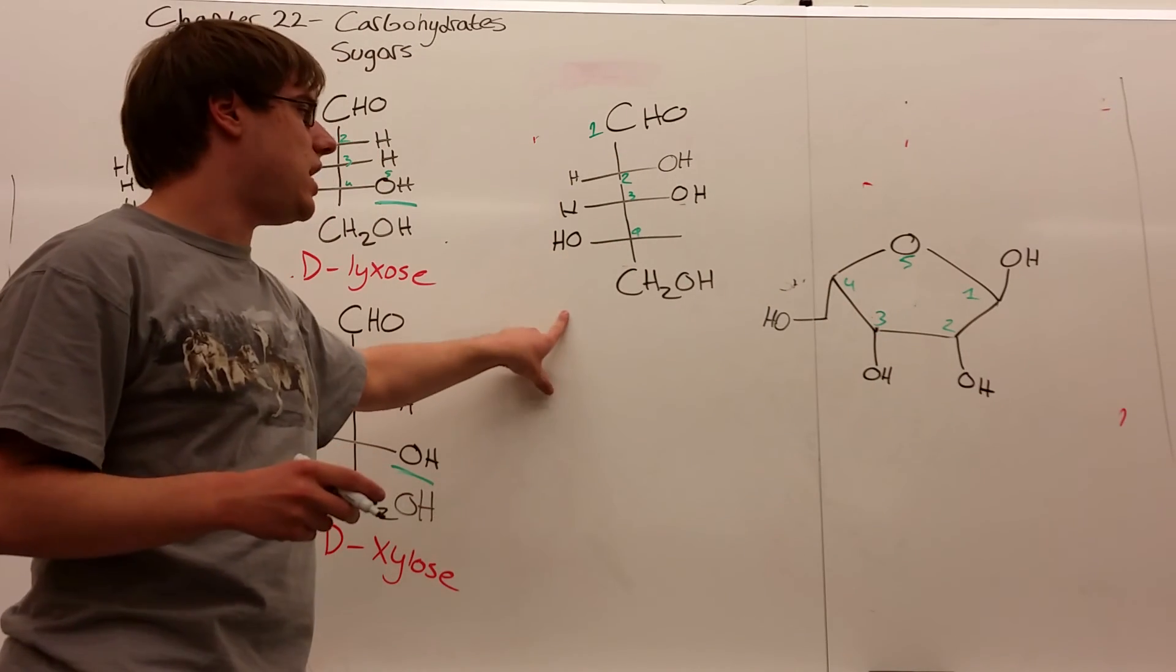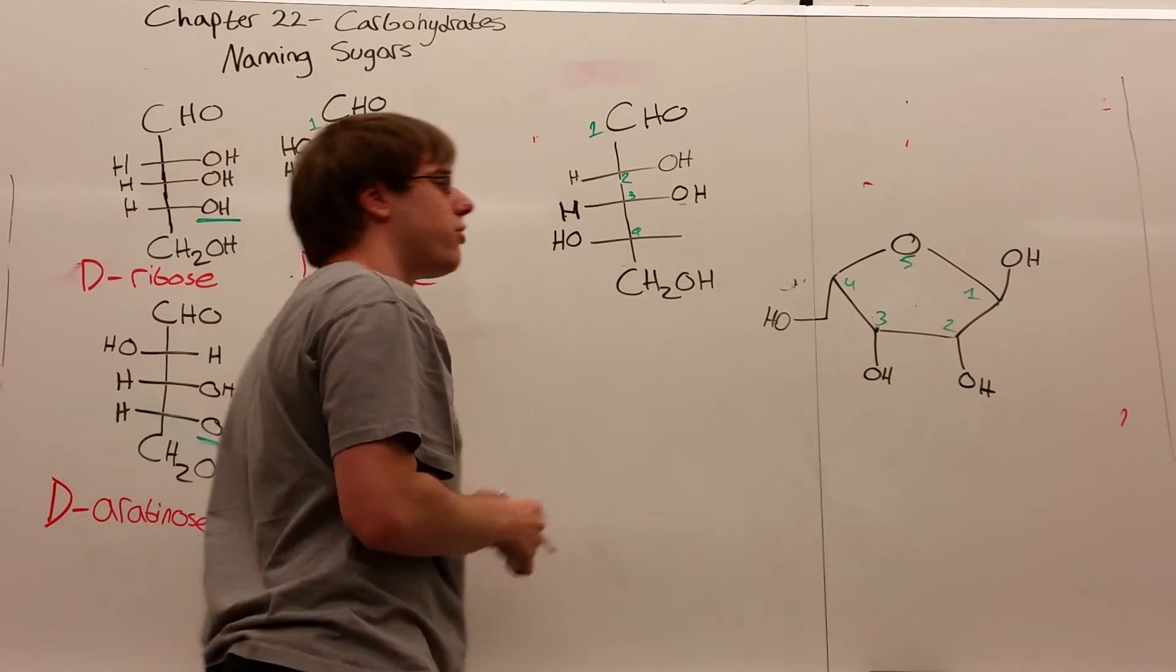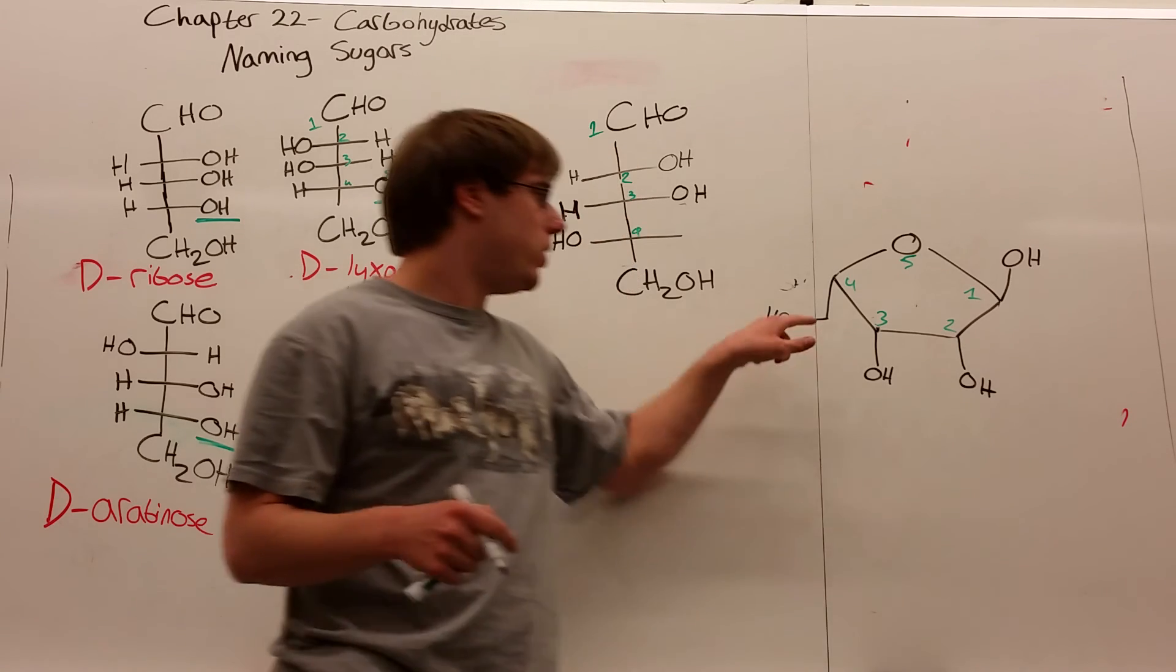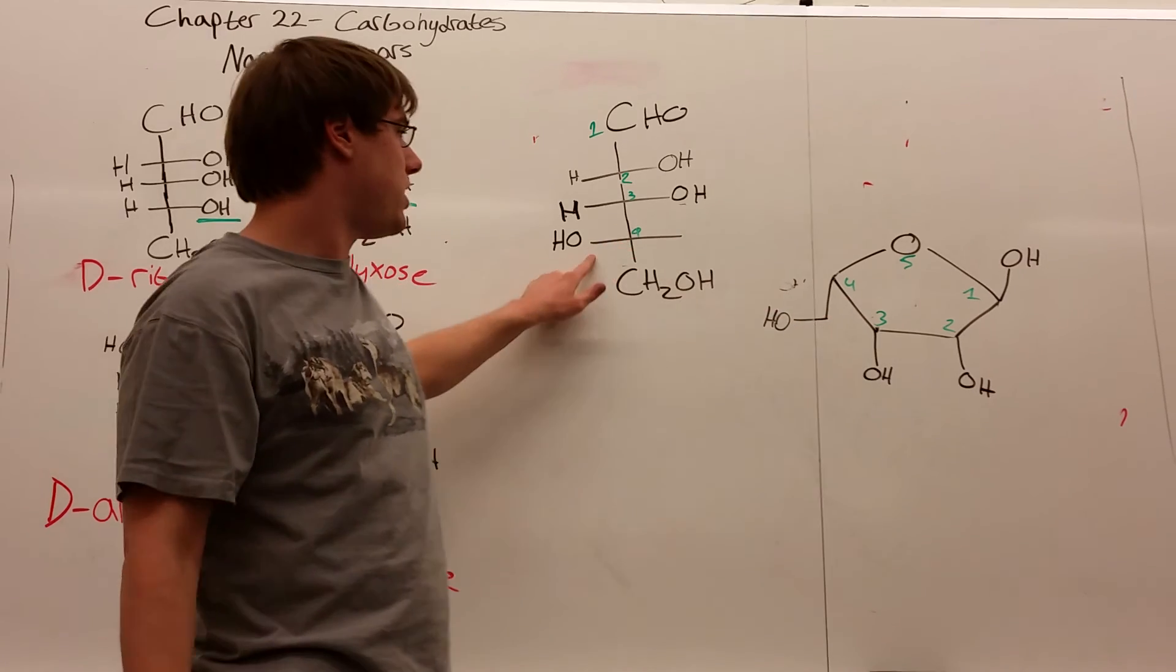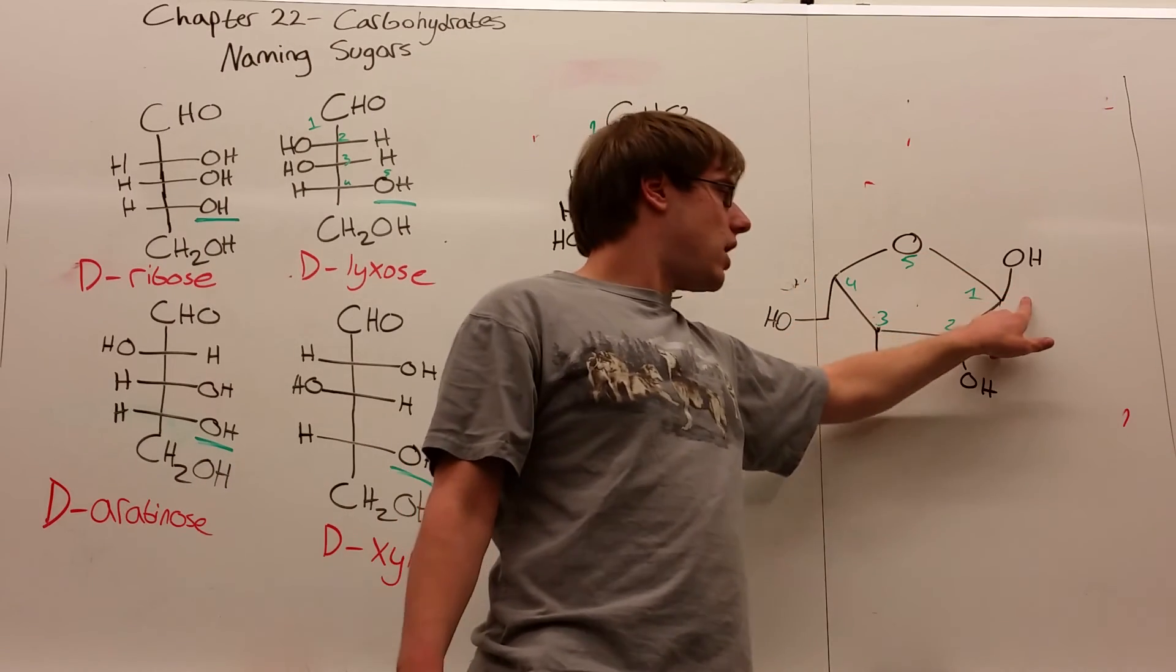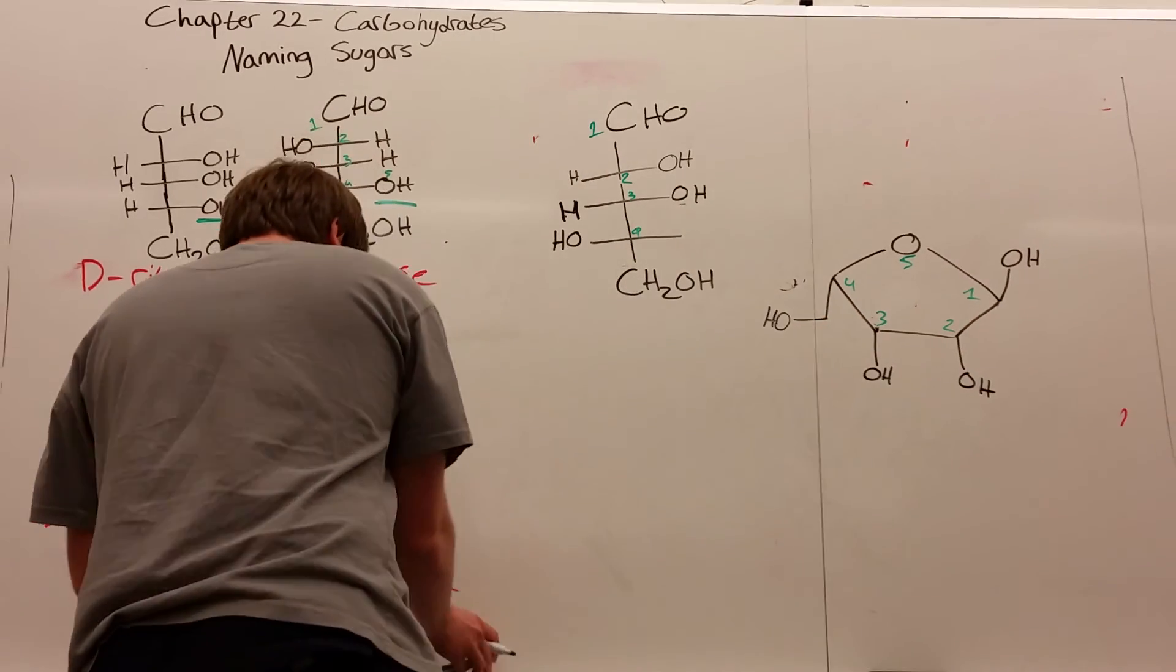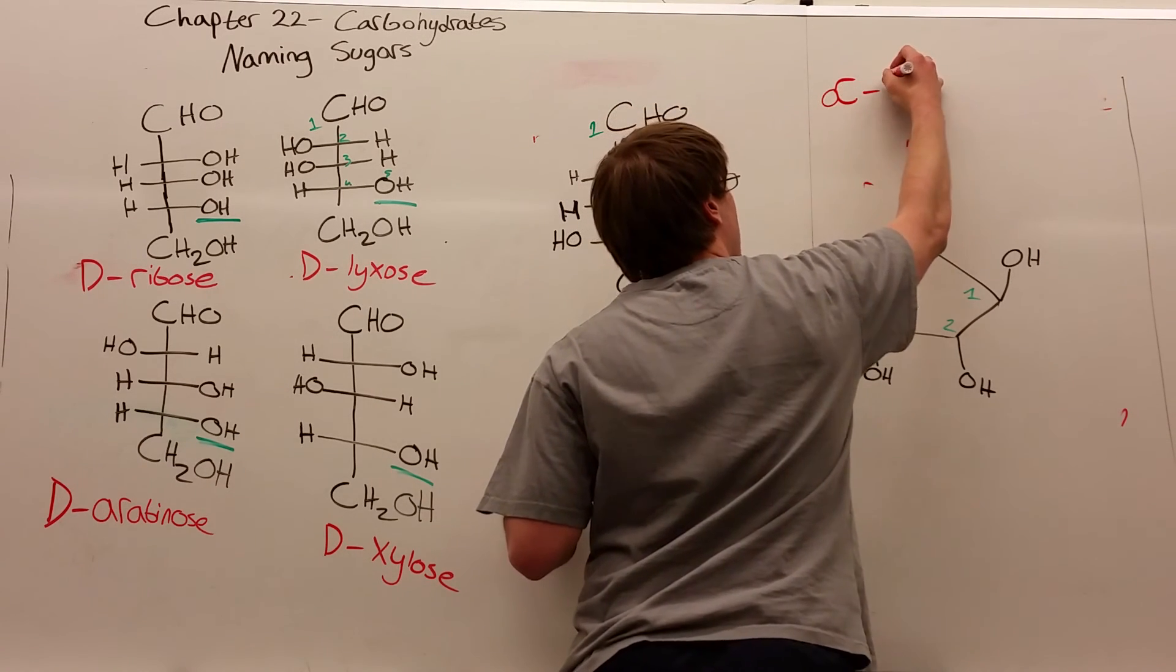From the Haworth, I can tell two things: whether it's beta or alpha, and whether it's D or L. It's an L sugar because the CH2OH group points down, confirmed by the penultimate OH being on the left. This is also alpha because the CH2OH group and anomeric OH point in opposite directions. So far, we know it's alpha-L.